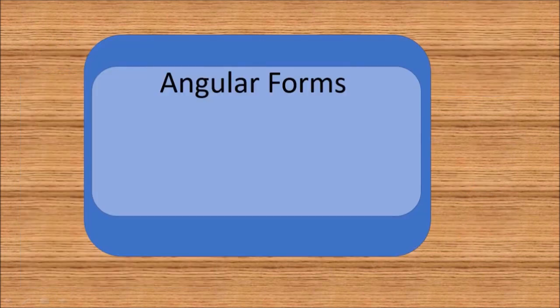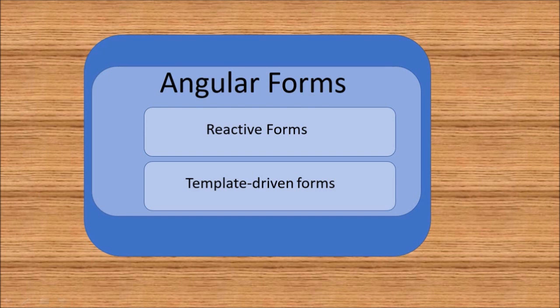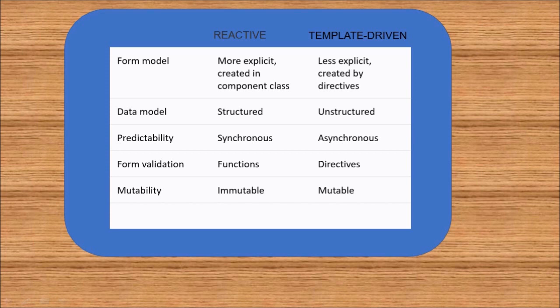There are two types of forms in Angular. The first one is reactive forms and the second is template-driven forms. This is a simple chart showing the features in reactive forms and template-driven forms. In the reactive form, the form model is more explicit since it is created in the component class. In the template-driven form, it is less explicit since it is created by directives.